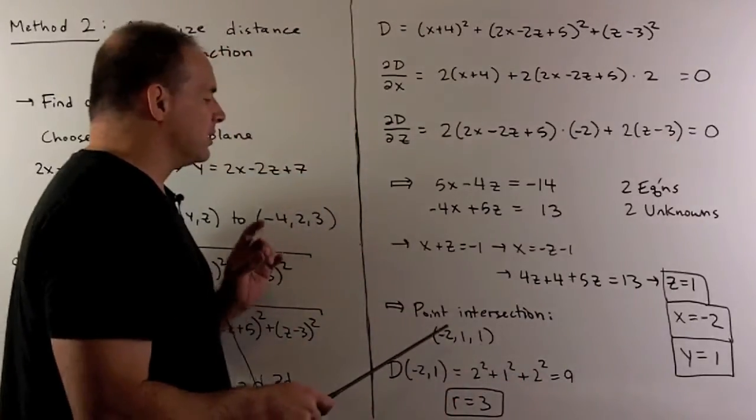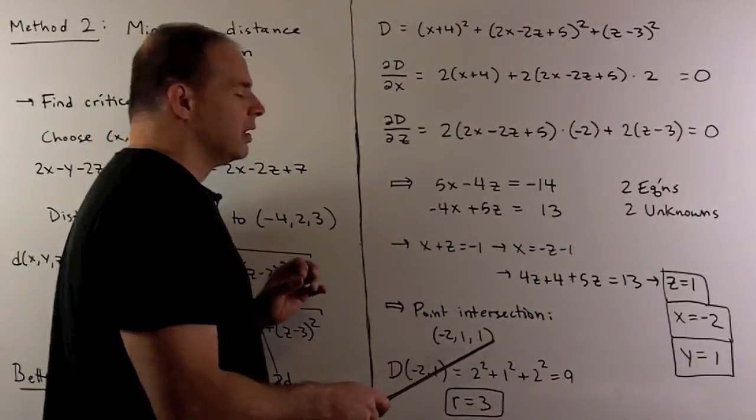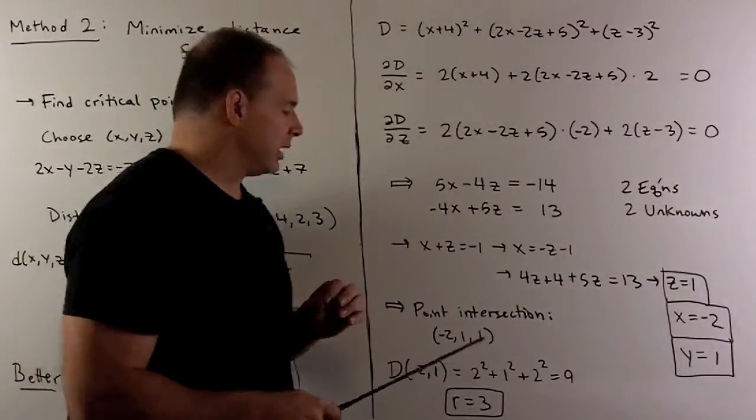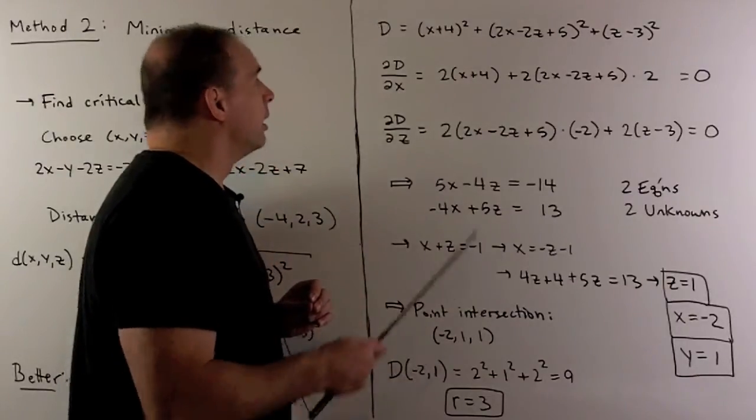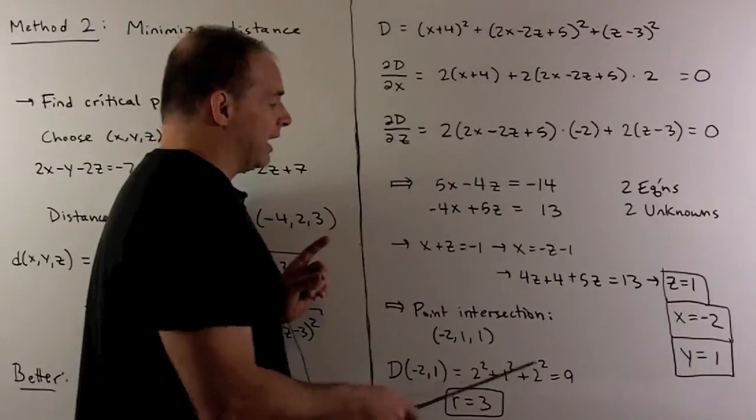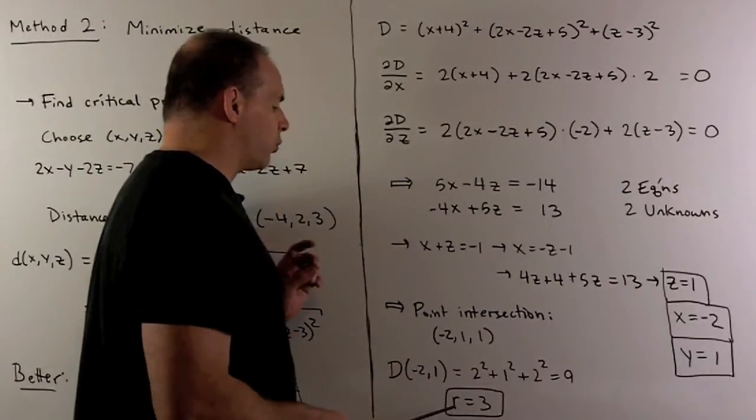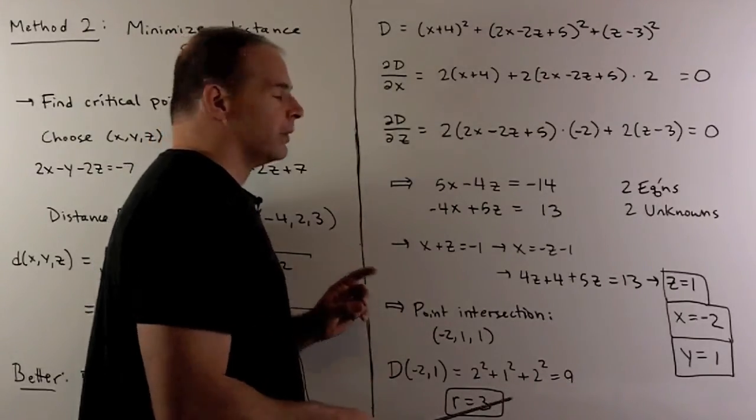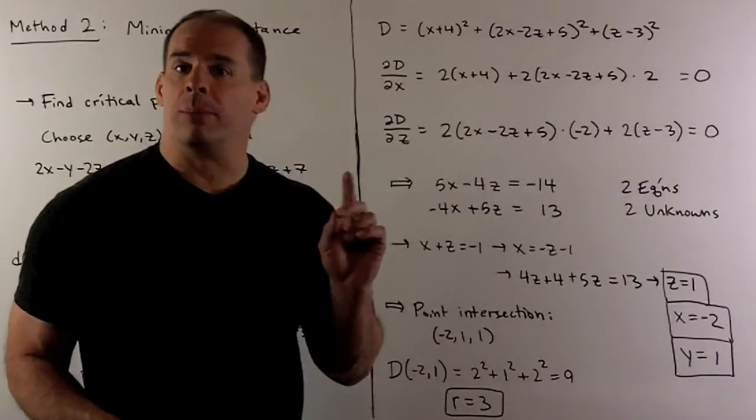Now, if we calculate the distance from this point to the center of the sphere, we could just take minus two and one, put it into our distance squared formula. We get a nine. And if I take the square root, we get the radius equal to three. So that checks our work from part one.